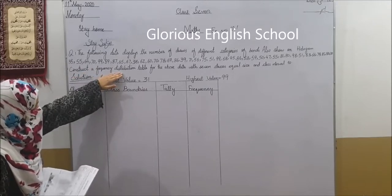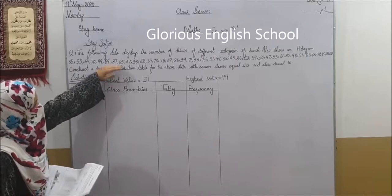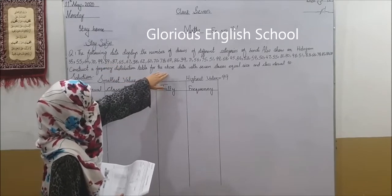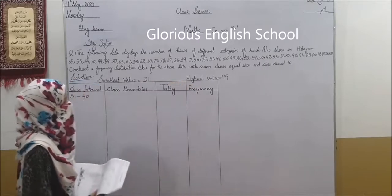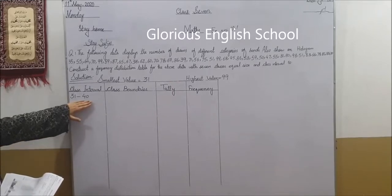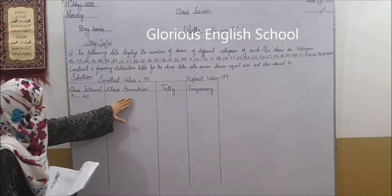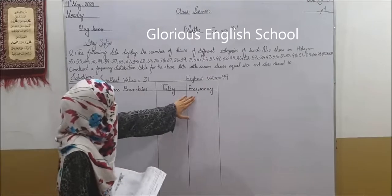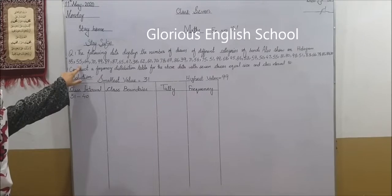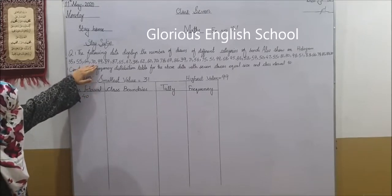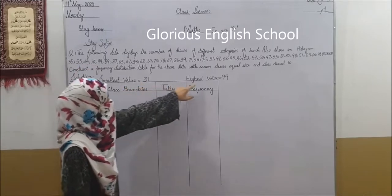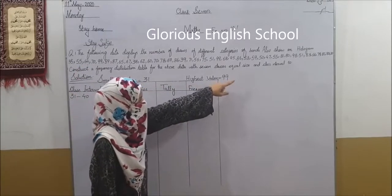This is the frequency distribution table given by the data. You have 7 classes of equal size, each defined by a class interval. The table has columns for class interval, class boundary, tally, and frequency. The smallest value in the data is 31 and the highest value is 99.